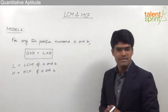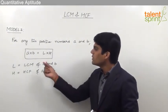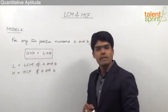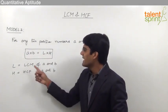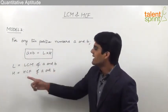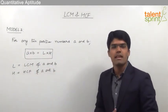For any two positive numbers A and B, A into B will be equal to L into H, where L is the LCM of the numbers A and B, and H is the HCF of the numbers A and B.